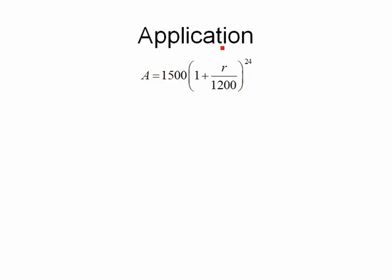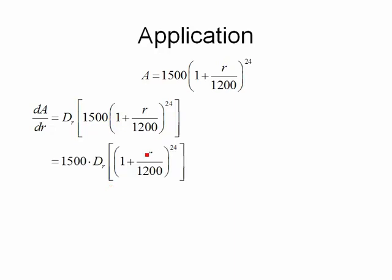So I've gone ahead and written my formula out here. So now to find dA/dr, we have to take the derivative with respect to r of 1,500 times the quantity 1 plus r over 1,200, that quantity raised to the 24th power. I'll notice here that there's a 1,500 that's multiplying this. So let me use our constant rule, and I'm going to pull that out in front of the derivative, because constants do not affect the derivative unless it's just a constant by itself.